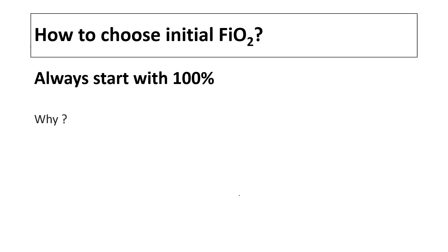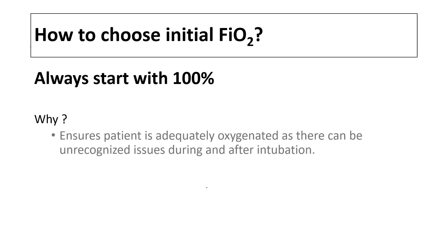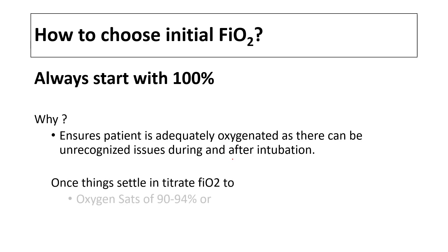How do you choose initial FiO2? You always start with 100%, and the reason for this is there may be some unrecognized issues during and after intubation, so it's better to err on the side of giving more. Once things have settled down, you can titrate the FiO2 to achieve oxygen saturation of 90 to 94 percent.